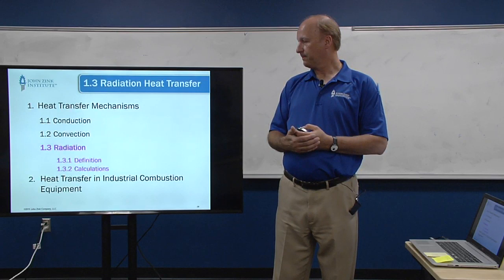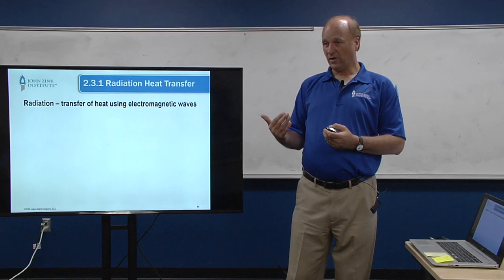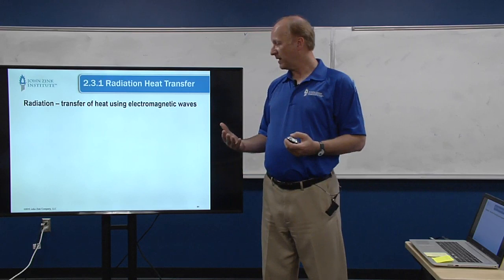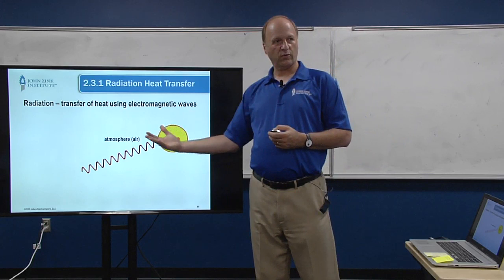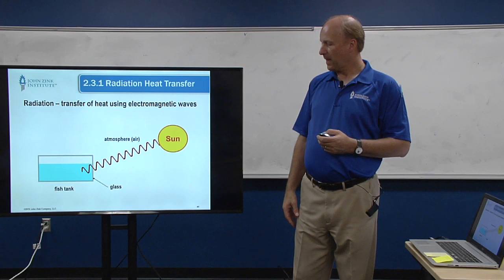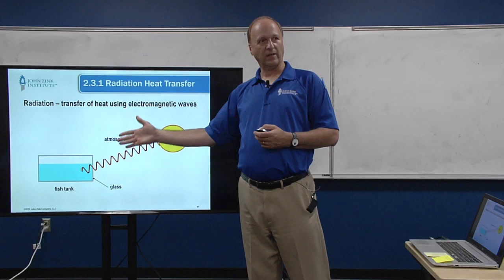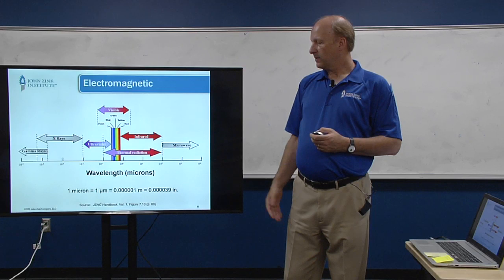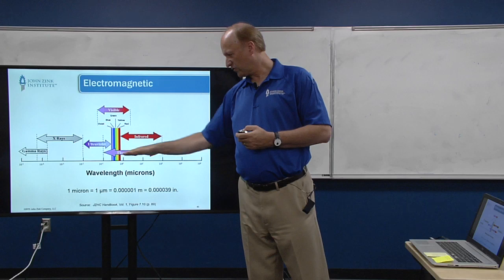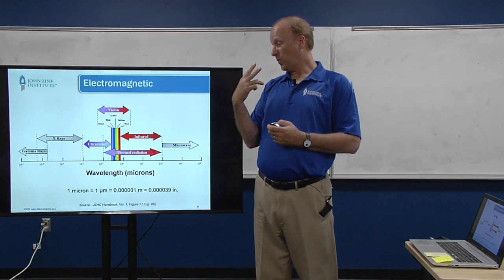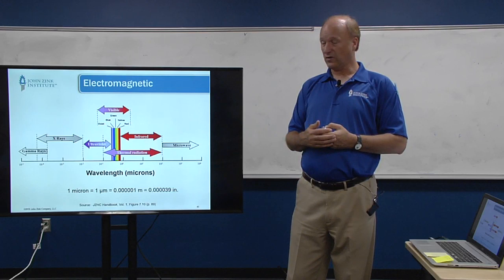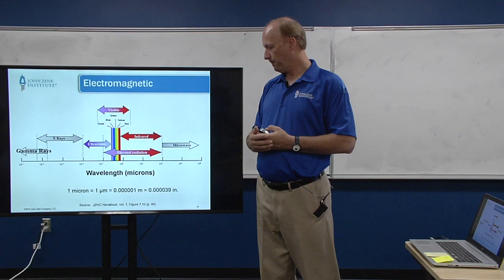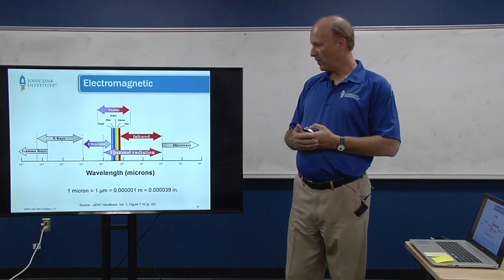Radiation is different from the first two mechanisms. It can go through a medium but also through a vacuum — it's electromagnetic radiation. We can look at how the sun transmits energy to us: most of it goes through a vacuum in space, then hits our atmosphere and travels through air. Thermal radiation is mostly in the infrared range. As humans we can't see infrared but we can feel it — when you go outside you feel the sun's energy. In a combustor or furnace, infrared is the dominant form of radiation.